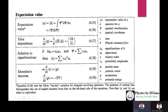For time dependence, the derivative of the expectation value of operator A-hat is: d/dt <A-hat> equals (i / h-bar) times <[H, A-hat]> plus <del A / del t>. This is the total derivative of the operator, analogous to classical mechanics where we use the Poisson bracket — here replaced by the commutator.